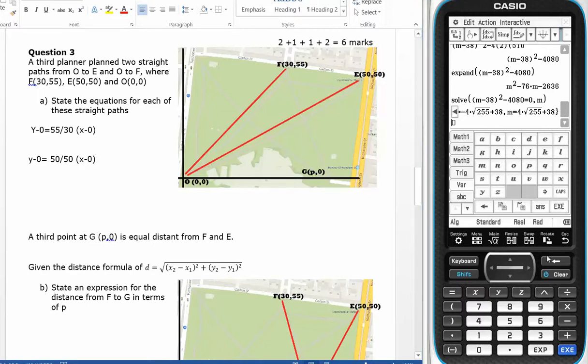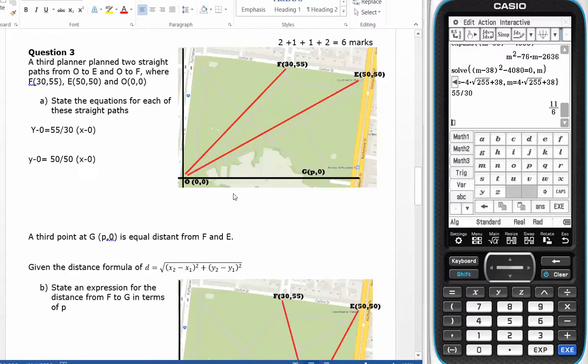I get a gradient of 55 divided by 30, and that gives me 11 sixths. So this is y equals 11x divided by 6.